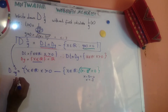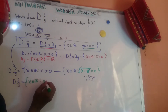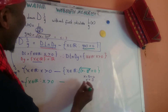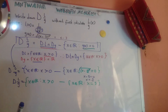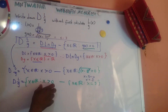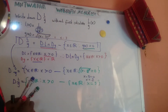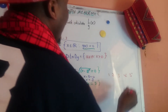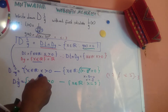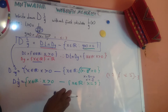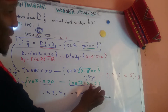So the domain of l over g equals: x ∈ ℝ whereby x > 0, minus x ∈ ℝ whereby x = 3. In other words, all elements greater than zero but not including x = 3, because we subtract that value out.